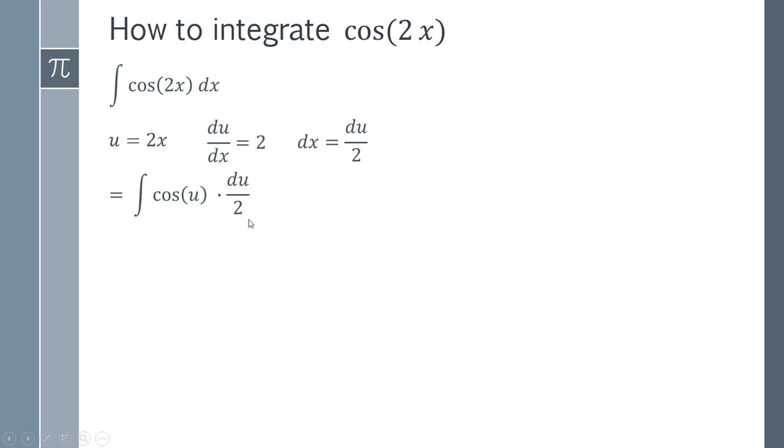Now, we can take a factor of a half out of this integration because we're multiplying by a constant. That's not going to have any effect. The integral of cos is simply sine. So we now get that the integration gives this result here.